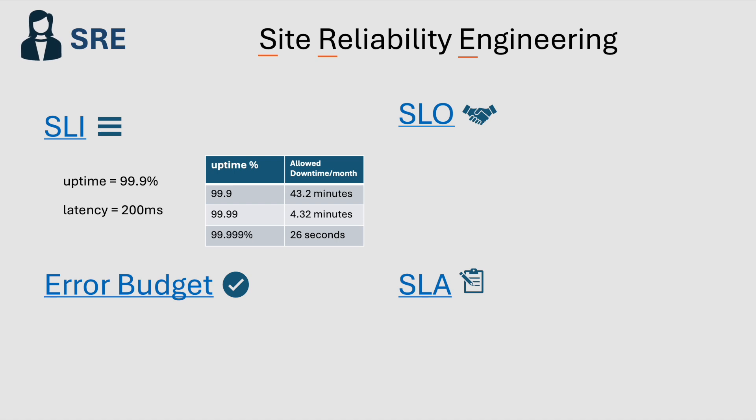Now, let's say when we buy GCP from Google, it promises 99.99% uptime over 30 days. This target or goal for a specific SLI over a set period is called an SLO, or Service Level Objective. That means GCP should be available 99.99% in a month — in other words, only 4.32 minutes per month of downtime is allowed. Similarly, 95% of requests should be served within 200 milliseconds.